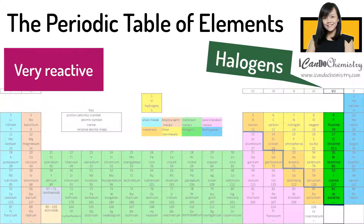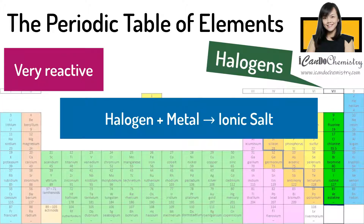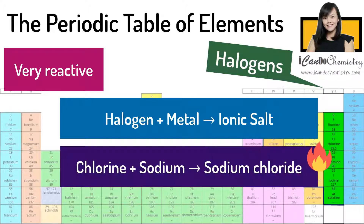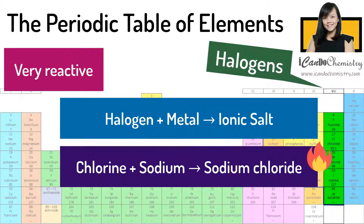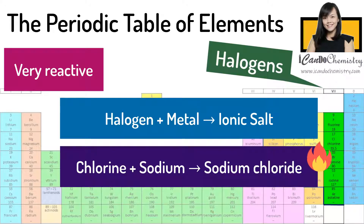All the halogens are poisonous and must be handled carefully in the chemistry lab. Halogens are very reactive non-metals. They react with metals to form ionic salts. For example, sodium burns in chlorine to form sodium chloride. A bright flame is observed in this reaction.